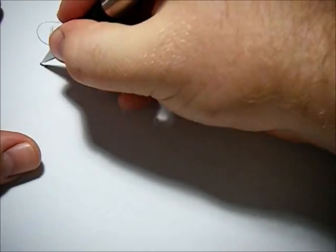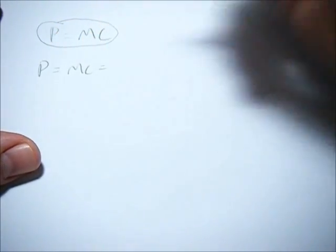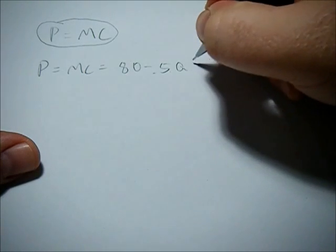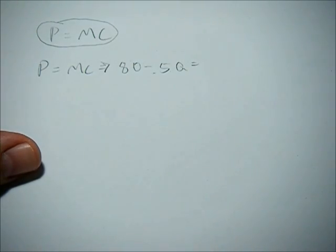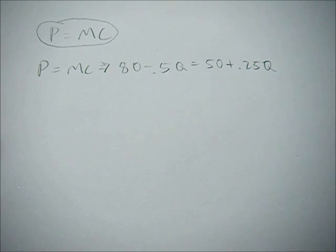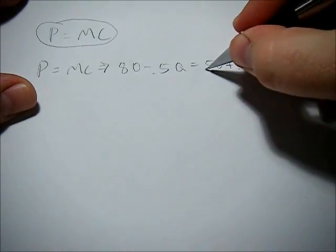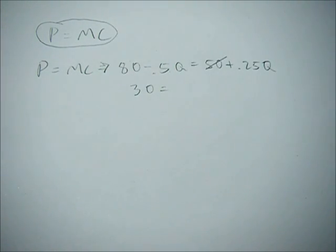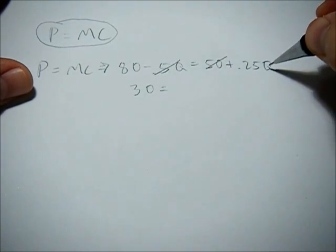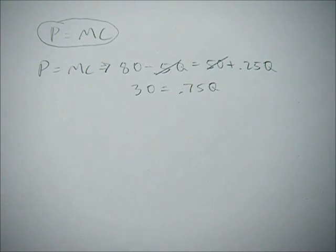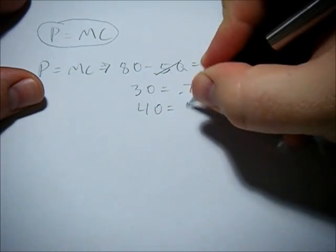So we take those equations we had before, price equals marginal cost, and our price was 80 minus 0.5Q. Our marginal cost was 50 plus 0.25Q. Now we can subtract 50 from both sides and add 0.5Q to both sides. So if we subtract 50, this goes away, and we're left with 30 over here. And then if we add 0.5Q to both sides, this goes away, and we can add it here, and we get 0.75Q. Now we can divide both sides by 0.75 to get 40 equals Q.